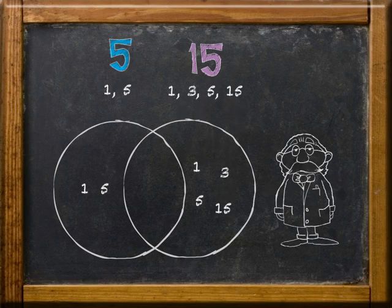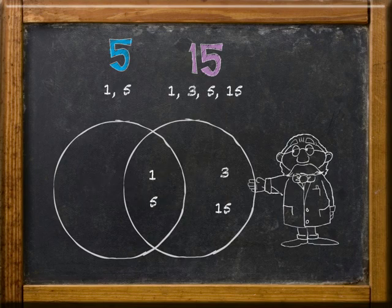Common factors for these two sets are 1 and 5. These go into the intersecting portion. Pretty easy, huh?